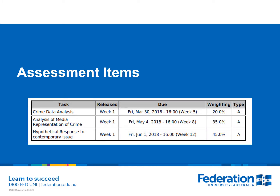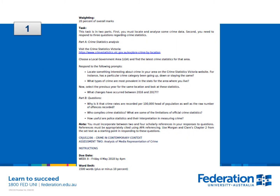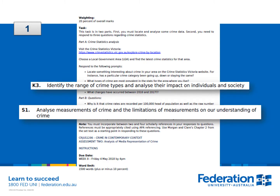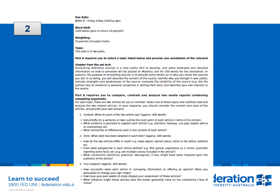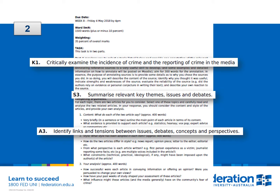There were three assessment tasks in this subject, which were all identified within the learning outcomes. The first assessment task was a crime statistics analysis which looked at two of the ILOs relating to identifying crime types and looking at the way they were measured. The second assignment was a media analysis assignment focusing on three of the ILOs — students critically examining, summarizing and identifying links and tensions between debates, concepts and perceptions.